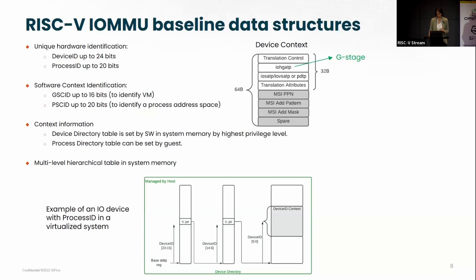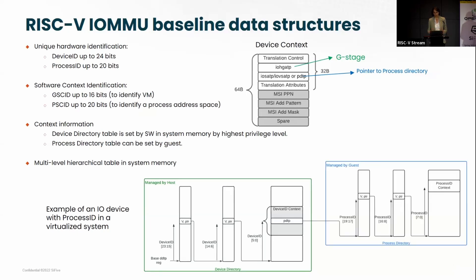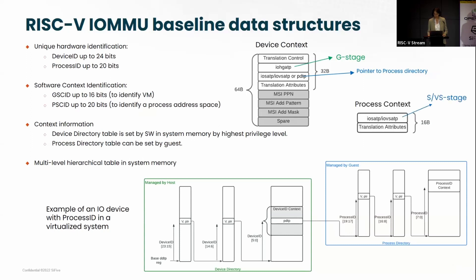If this device has a process ID, the next entry in the device context provides a pointer to the process directory. That process directory is intended to be in the control of the guest, which will manage this table by itself. Depending on the width of the process ID, you can have three, two, or one level of process directory. We finally reach a process context, which is an IO-SATP or IO-VSATP depending on the case, and that gives you the first stage translation rule — S-stage or VS-stage.